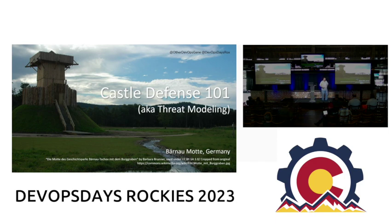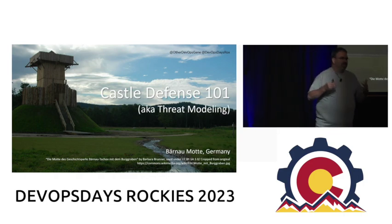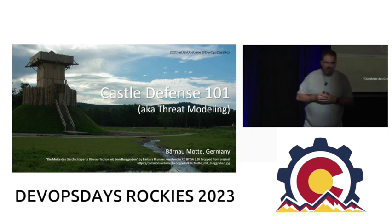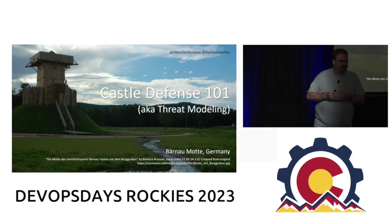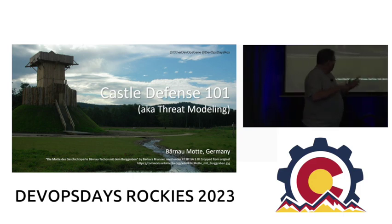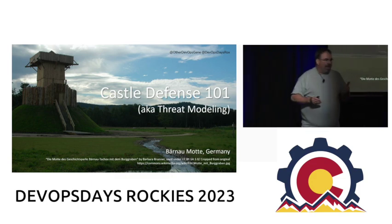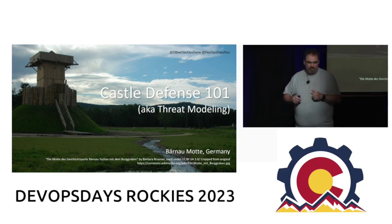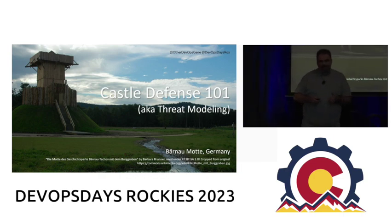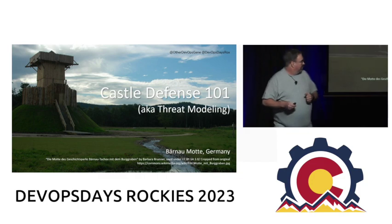Mott means hill, Bailey means low land underneath or flat ground. Take a look at it and yell out what are some of the things you see as advantages for defending this castle. Height, anything else? Observability - they could see all the way around. Anything else? There's water around it - there's a moat going around it. Single entry point.